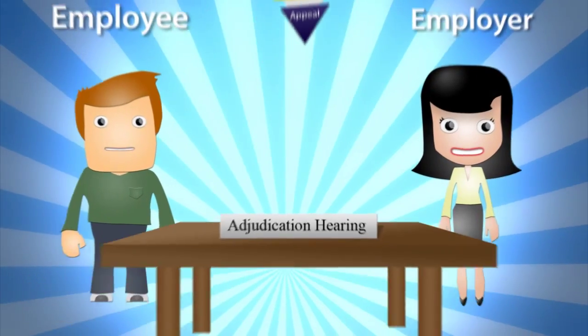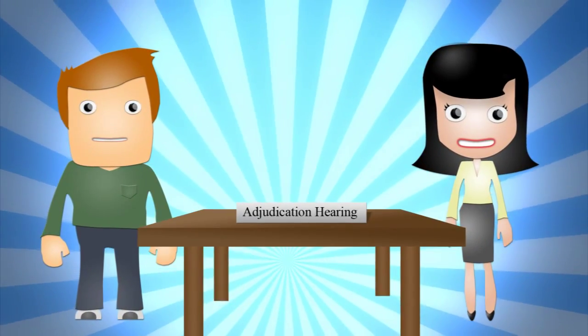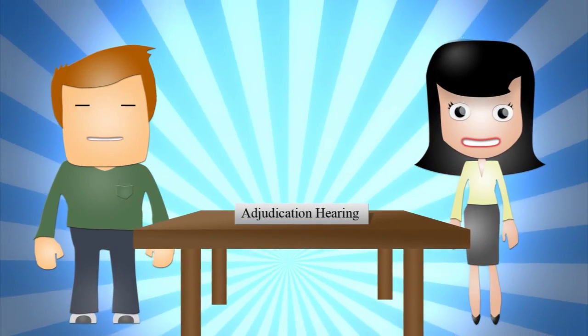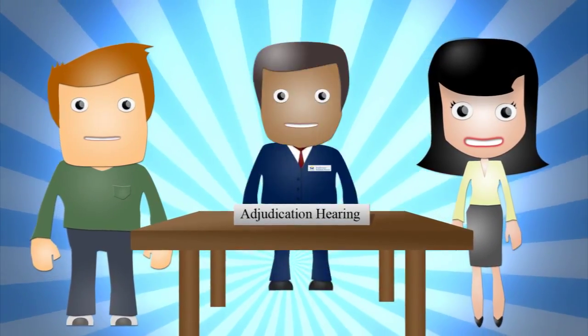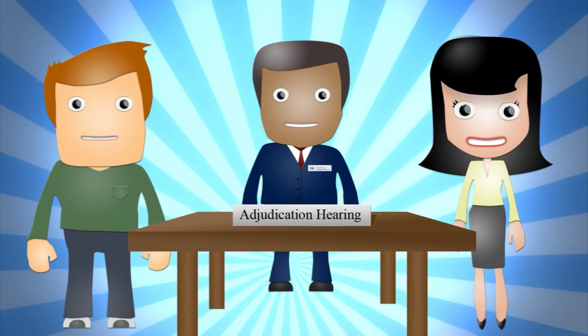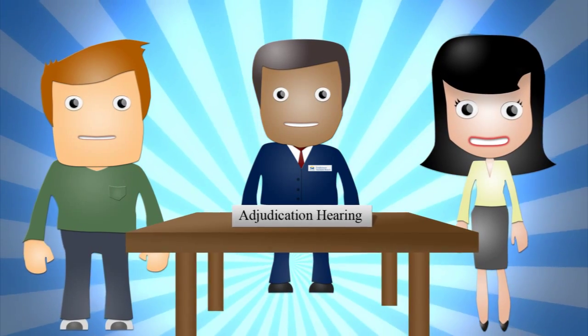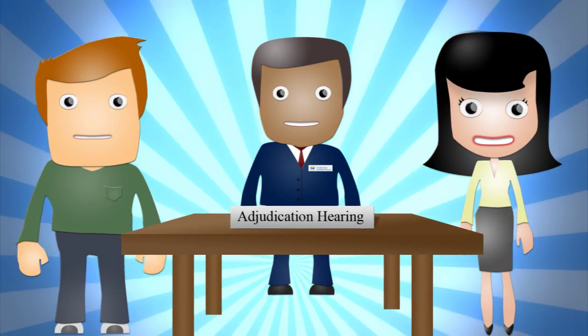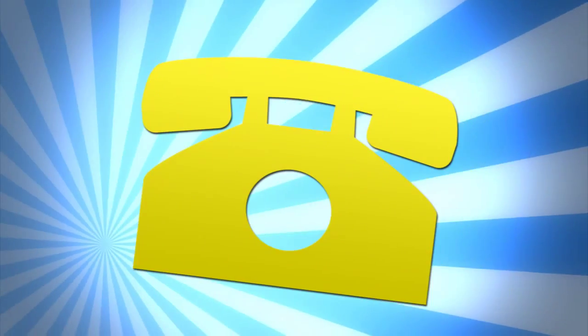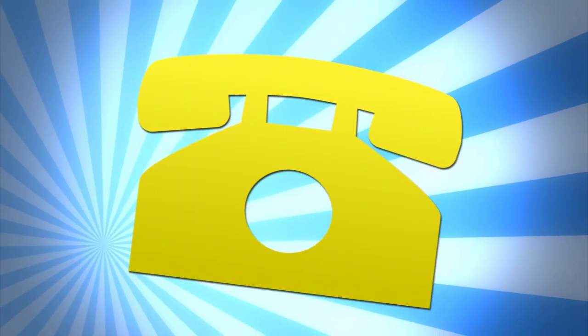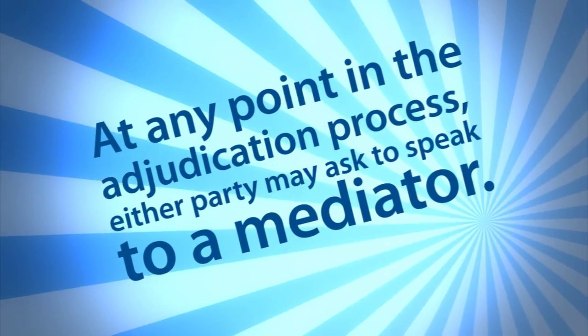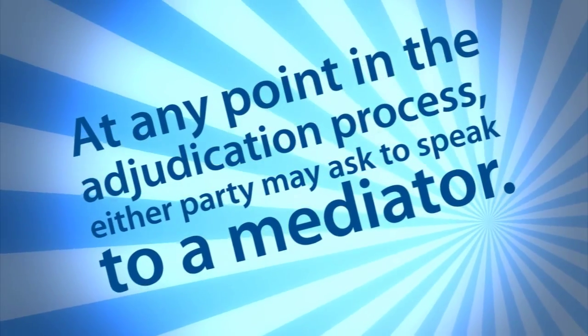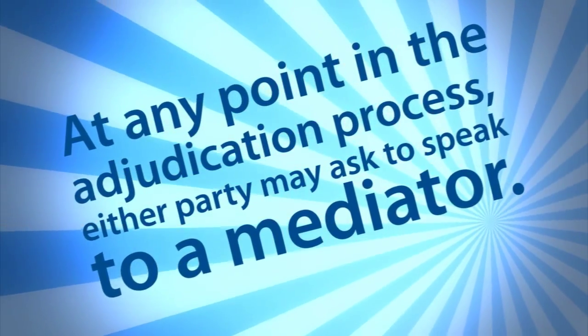An adjudication hearing is a more formal way of resolving a complaint. It is led by a member of the Employment Standards Branch and can be conducted in person or by teleconference. At any point in the adjudication process, either party may ask to speak to a mediator.